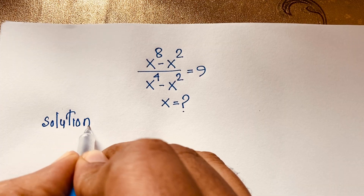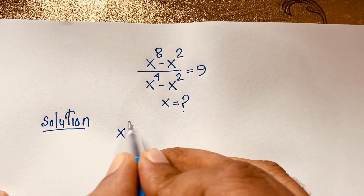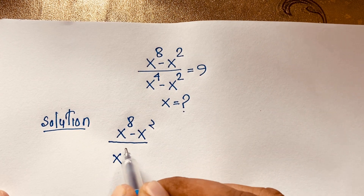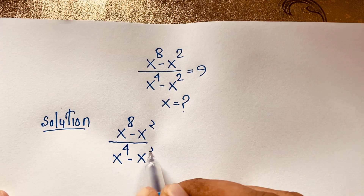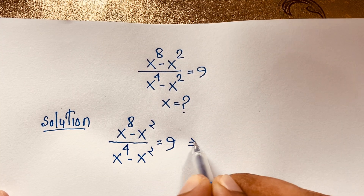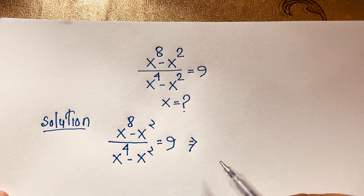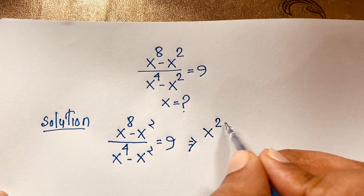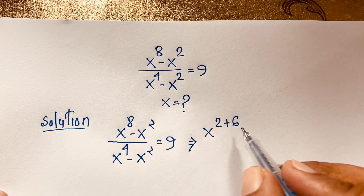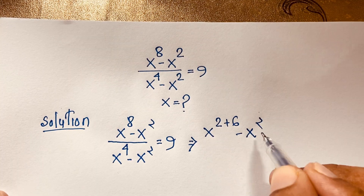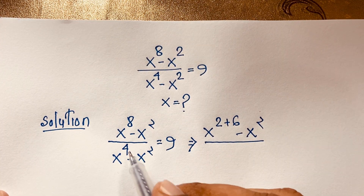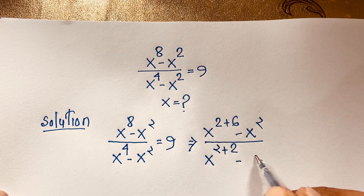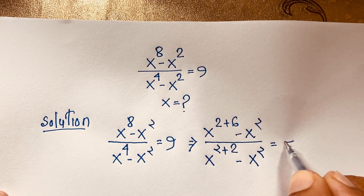Our question is x to the power 8 minus x to the power 2, over x to the power 4 minus x to the power 2, is equal to 9. You can see that x to the power 8 can be written as x to the power 2 plus 6, since 2 plus 6 equals 8. Then the denominator has x to the power 2 plus 2, which equals x to the power 4, minus x to the power 2, all equal to 9.